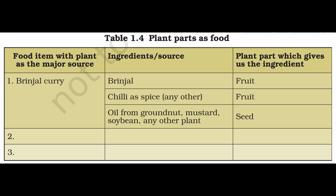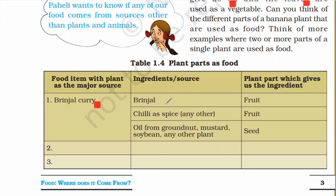For example, if you had written brinjal curry, then the ingredients are brinjal, chilli, and oil from groundnut, mustard, soybean or any other plant. The plant parts used include: brinjal is a fruit, chilli as a spice is also a fruit, and the oil you used — like mustard or soybean — is obtained from the seeds of the plant.